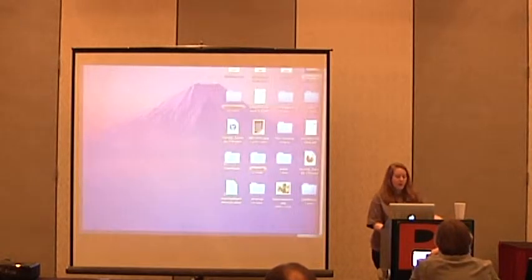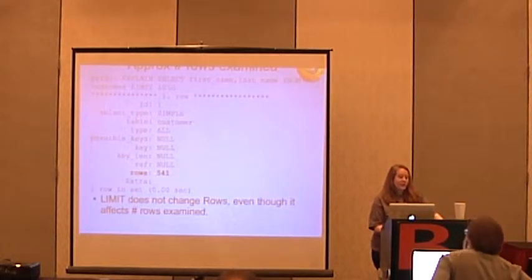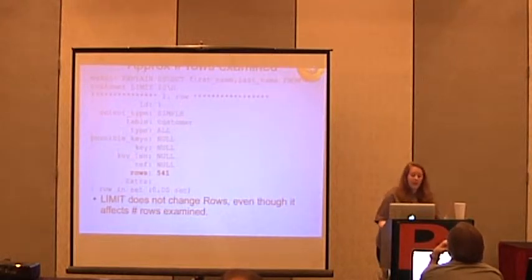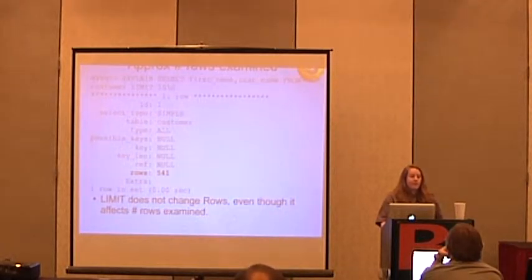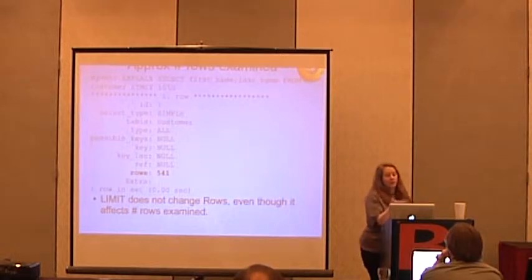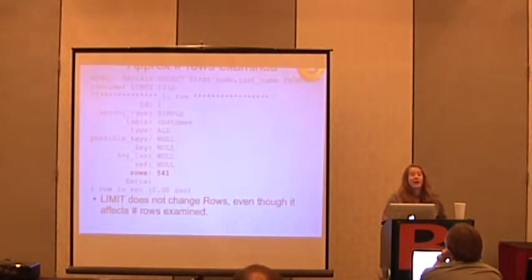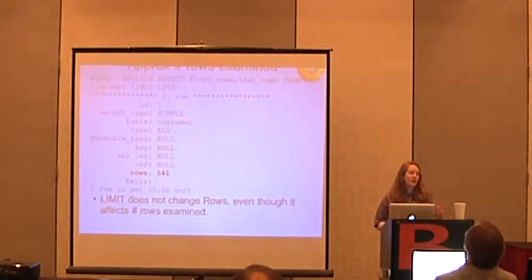The rows column is the approximate number of rows examined. If you use a LIMIT, it doesn't actually change that in the EXPLAIN output. Even though LIMIT would stop after getting to ten rows, the explain plan is made without regard to LIMIT. Then when execution happens, the LIMIT is applied. So you can kind of get a false query plan because of that LIMIT.